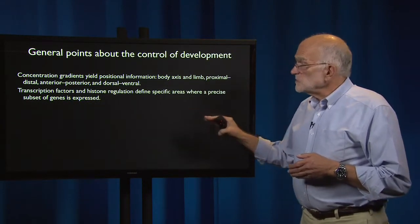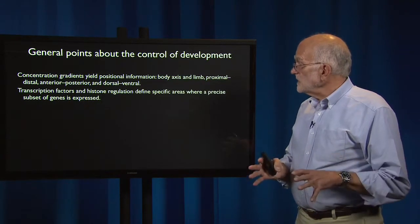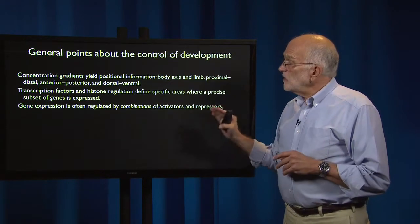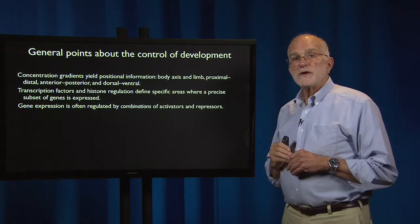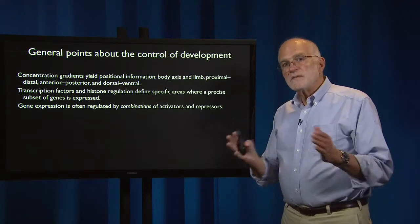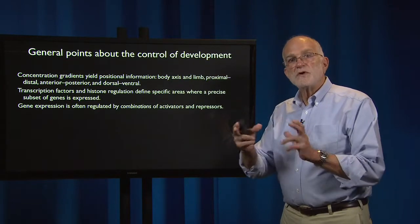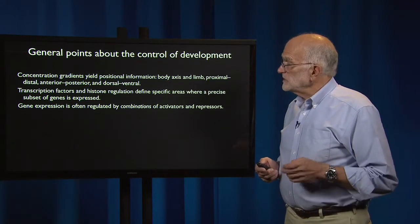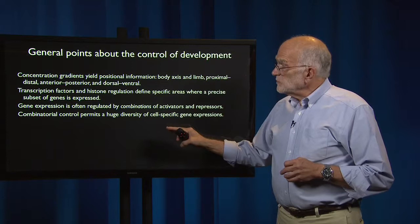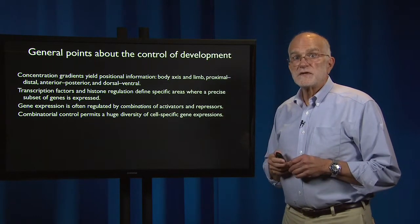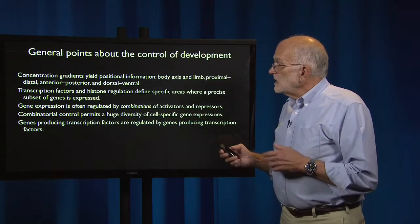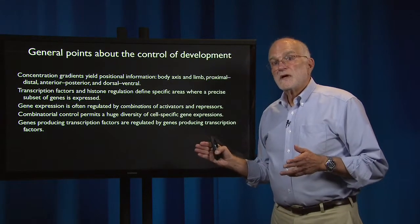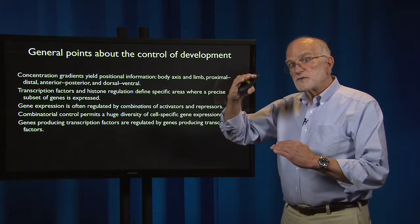Transcription factors and histone regulation then define specific areas of the genome where a precise subset of genes is expressed. Gene expression is often regulated by combinations of activators and repressors. This is important because a limited number of activators and repressors can be put into different combinations to generate many more possible targets for activation or silencing. This combinatorial control permits a huge diversity of cell-specific gene expression.